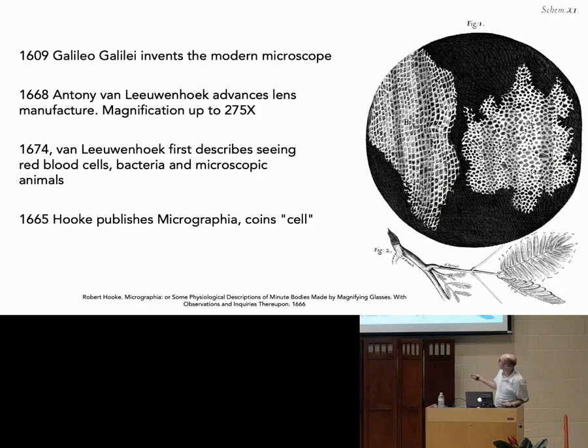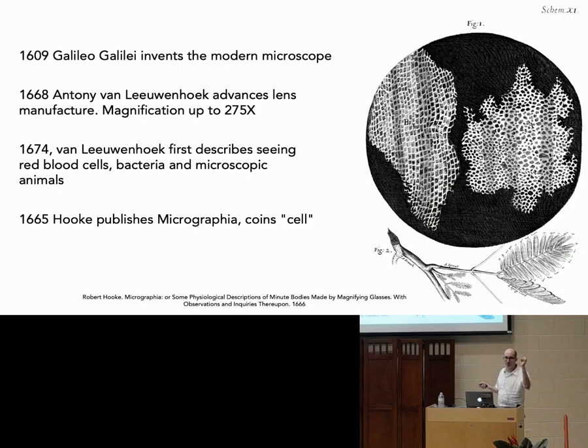Other people like Hooke published a really interesting book called Micrographia that captured a lot of the images that people were looking at in microscopes. This is an example of a cork plant, and this is the first time someone looked at these little structures and called them cells. He thought it looked like a honeycomb, so he used the word 'cell,' which was the same word that people use for the cells of the honeycomb. That's where the word 'cell' came from.